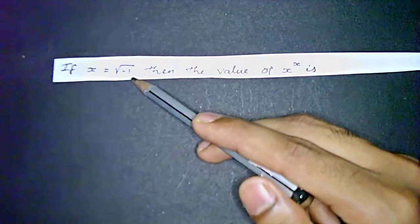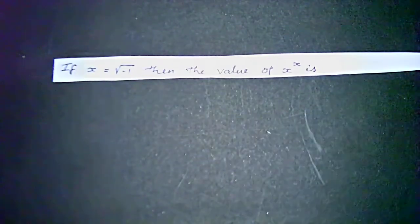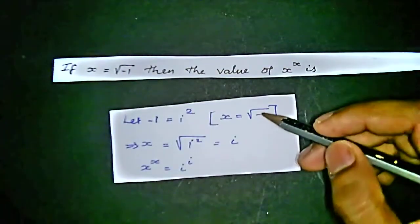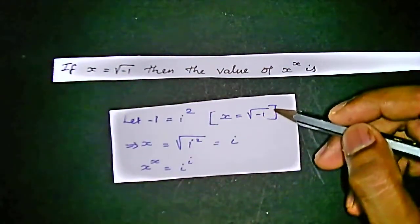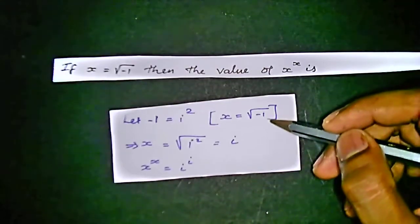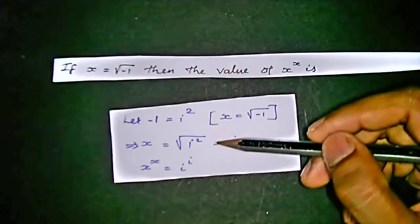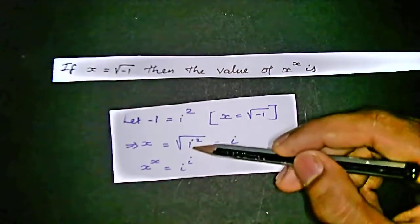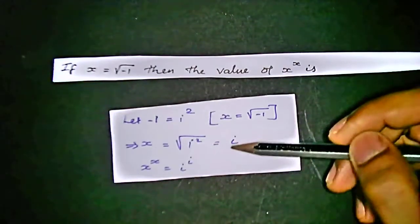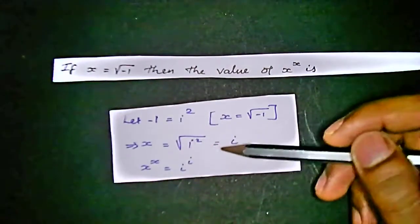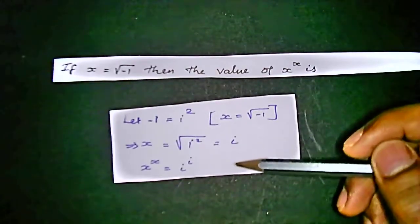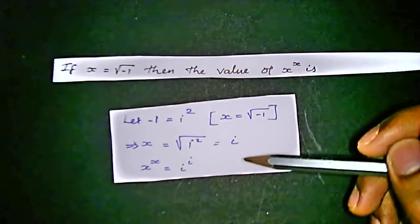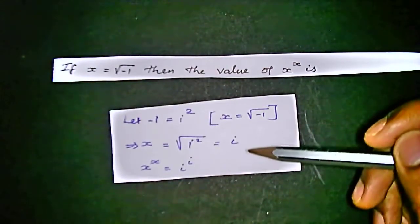In complex terminology, we use minus 1 for i squared, so we apply minus 1 equals i squared. We already have the x value as root of minus 1, which can be replaced with root of i squared. So we'll get x equals root of i squared, that means i. Root and square cancel, so x equals i.